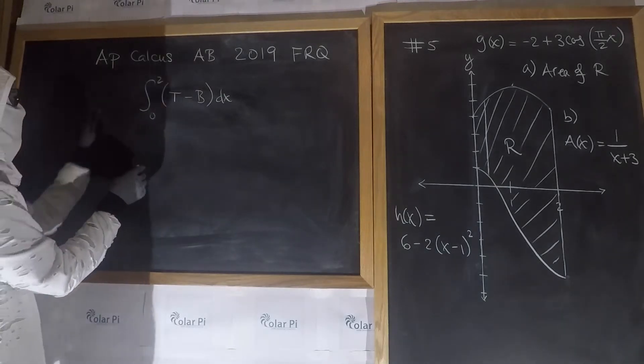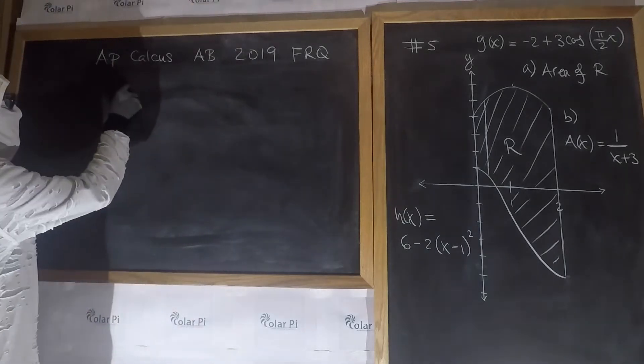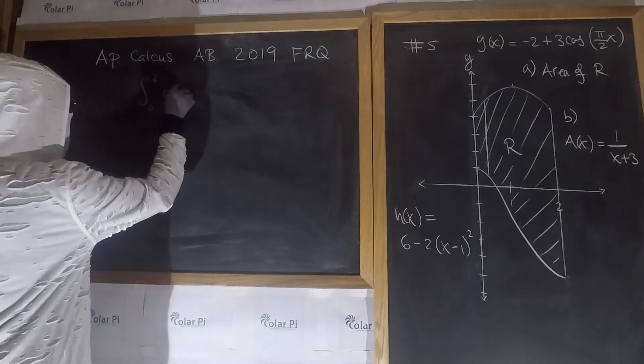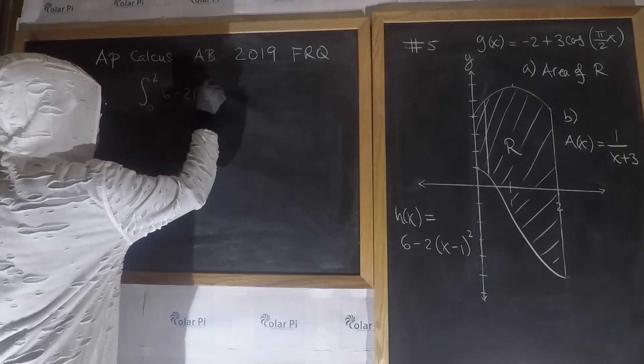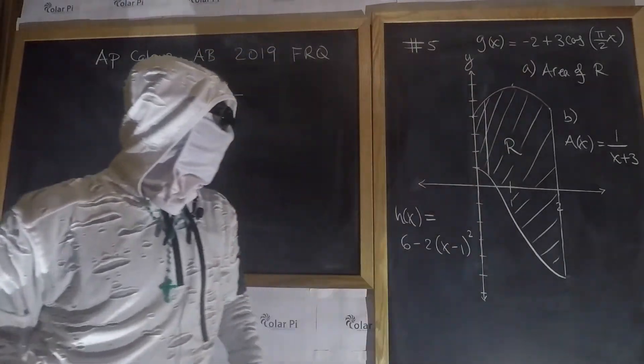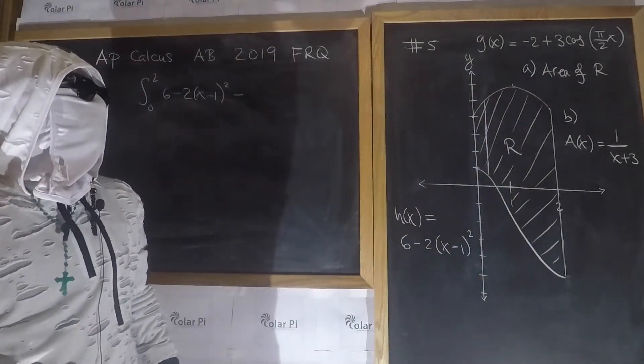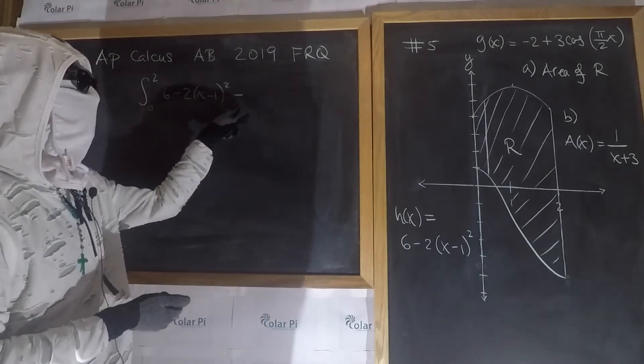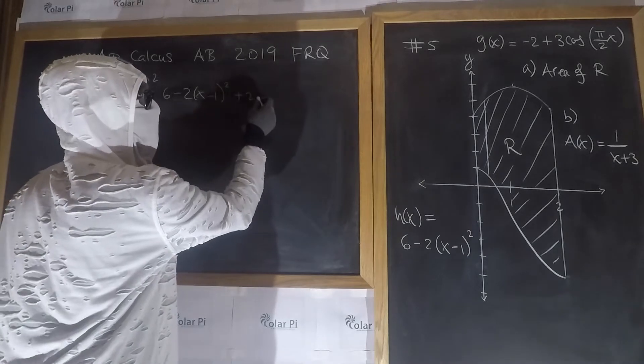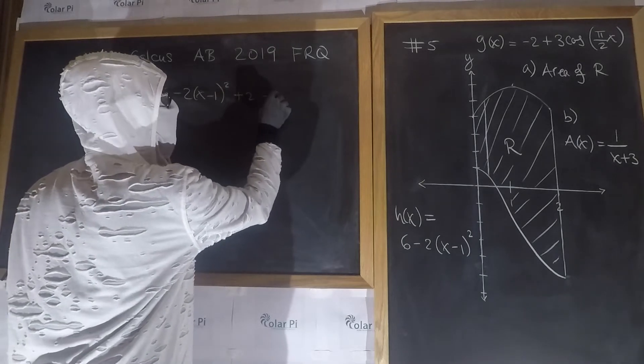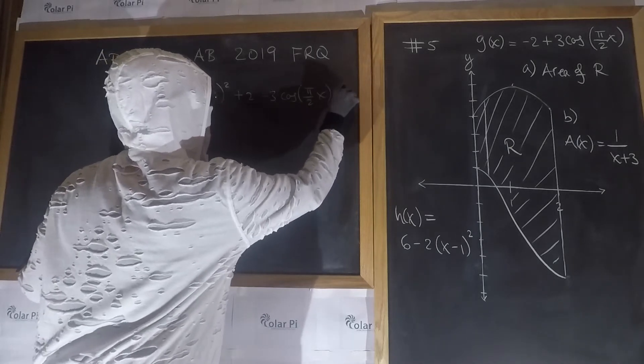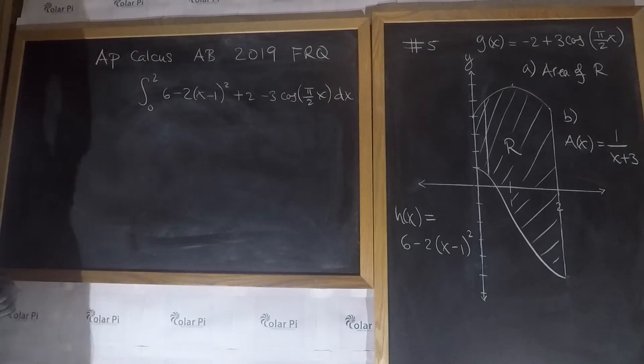This is 0 to 2, and then the top function is 6 minus 2 times x minus 1 squared, and then minus the bottom function, which is g of x, the cosine function that's transformed. Subtracting it is the same as changing the signs there, so I'll go plus 2 minus 3 cosine of pi over 2x, and then of course dx.